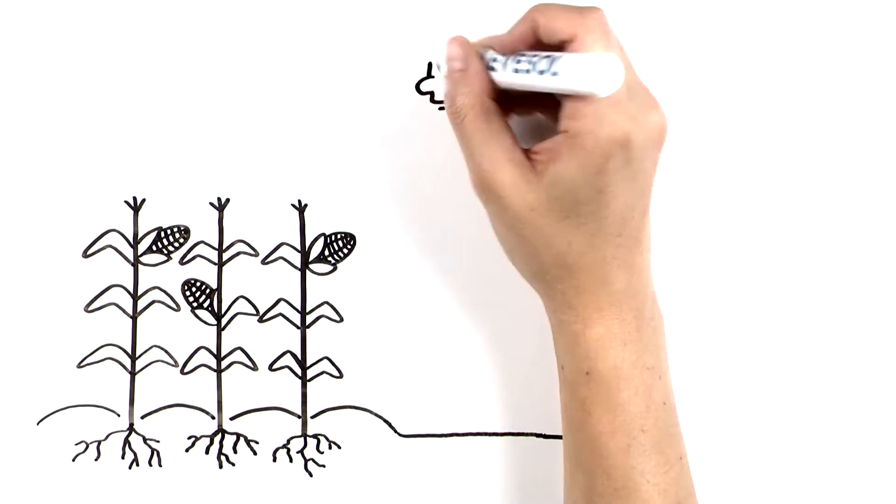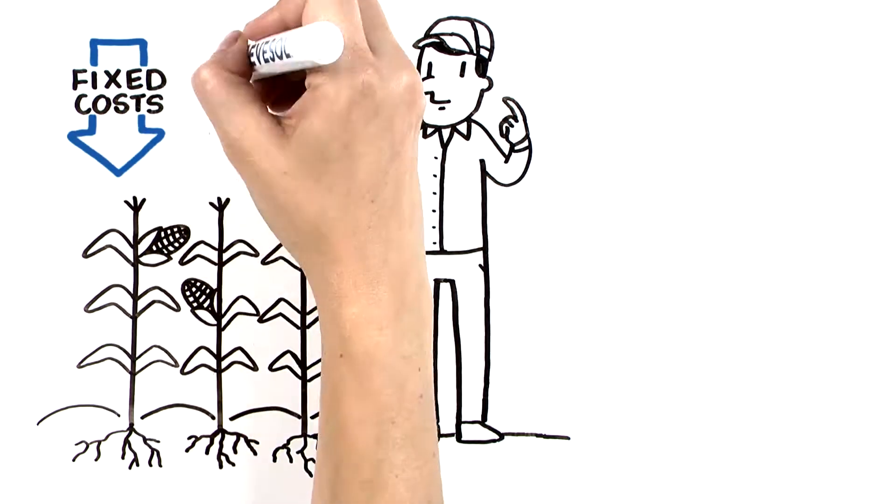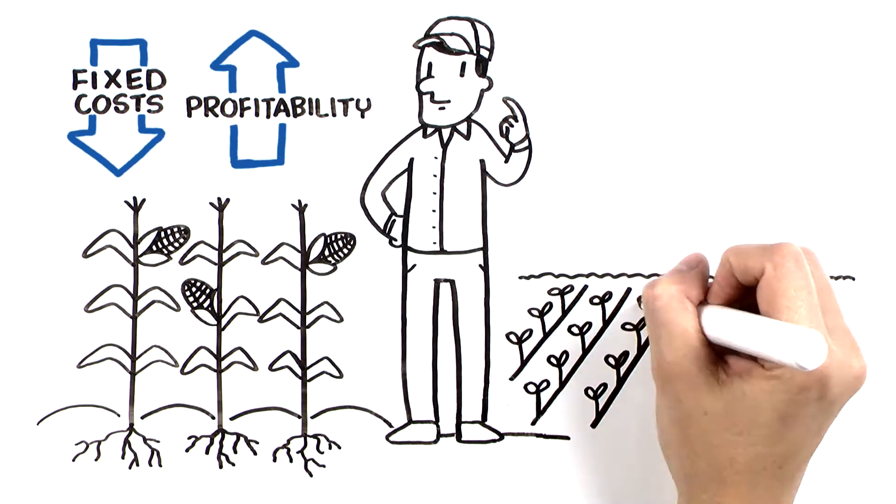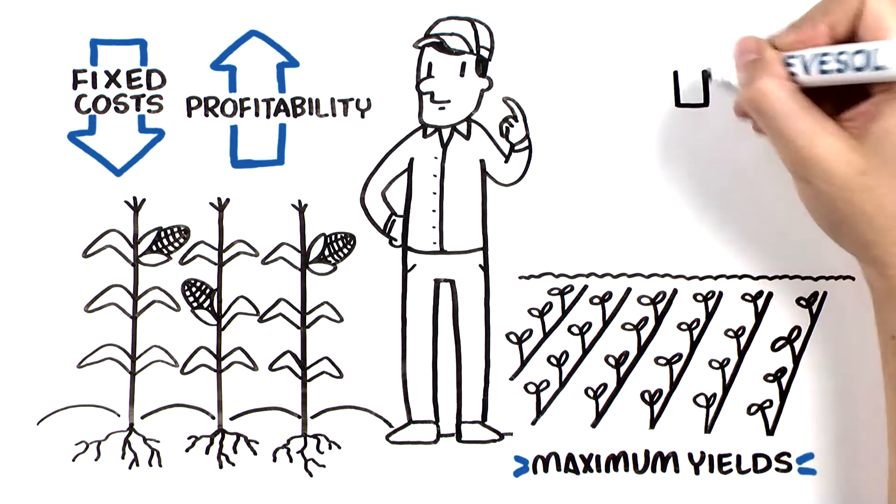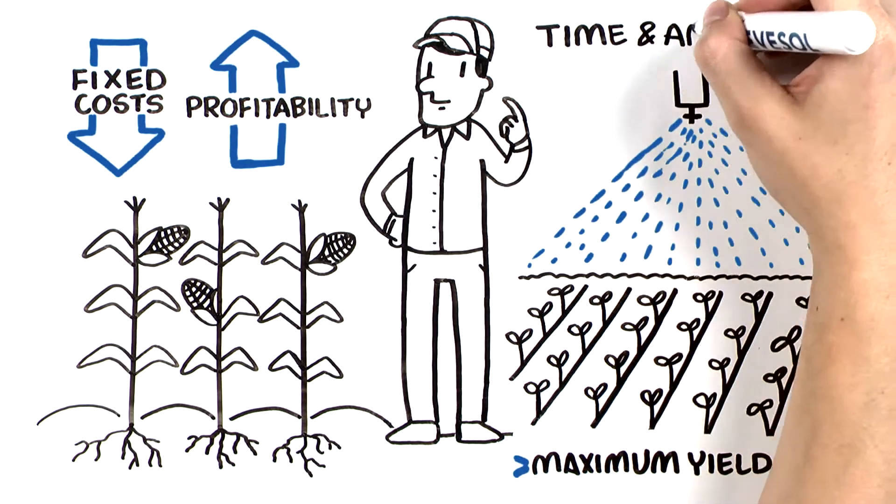Current commodity prices mandate that growers maximize their yield potential to dilute fixed costs and increase profitability. To achieve maximum yields, it is critical all essential nutrients are supplied at the appropriate time and in the amount needed.